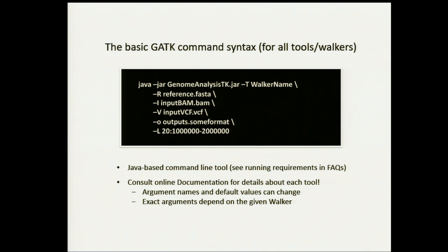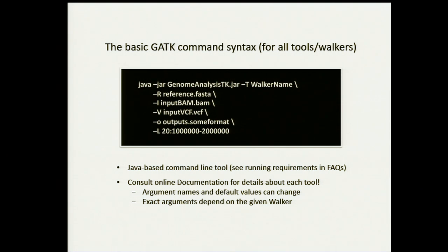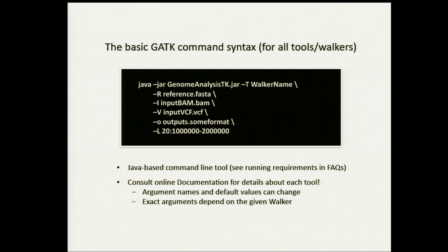If you work on variant files, you use the dash-V flag and specify which variant file you're working on. Usually you also specify the output file. Very important is the interval — you can specify which part of the genome you want to work on. For example, it can be a specific interval in chromosome 20, or a whole chromosome like dash-L20 or dash-LX. You can also use multiple intervals and specify the union or intersection. If you don't use this parameter at all, you're working on the whole genome.